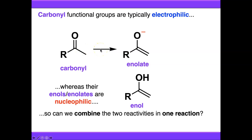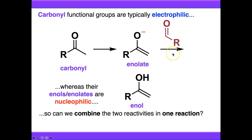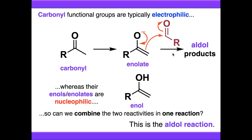The answer is yes. If we treat an enolised carbonyl compound — an enolate — with an unenolised carbonyl compound, we can get the combination of the two reactivities where the nucleophilic alpha atom attacks the electrophilic carbonyl carbon and we end up with aldol products. And this is the aldol reaction.